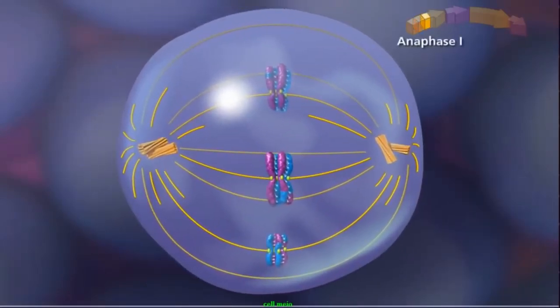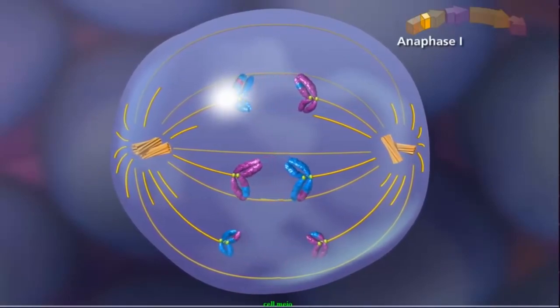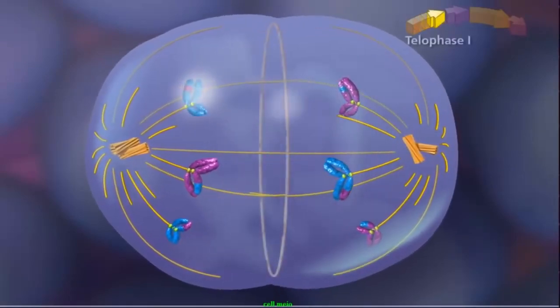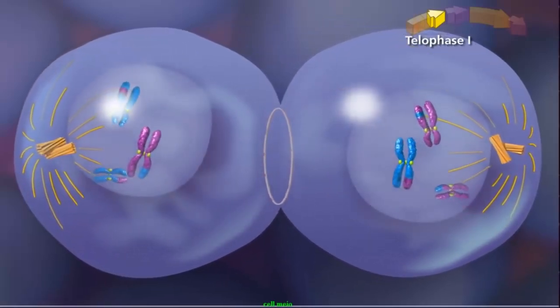In anaphase I, the homologous chromosomes separate and move toward opposite poles. Meiosis I ends with telophase I, when the chromosomes decondense and the nuclear envelope reforms.